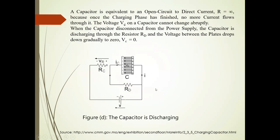When there is full charging, no more current flows through it, and the voltage VC on the capacitor cannot change abruptly. When the capacitor is disconnected from the power supply, it is discharged through resistance RD. The voltage between the plates then drops down to zero.